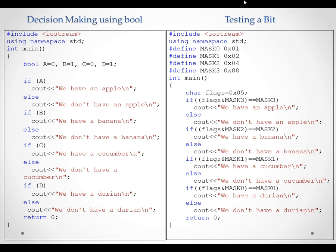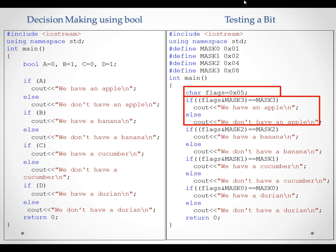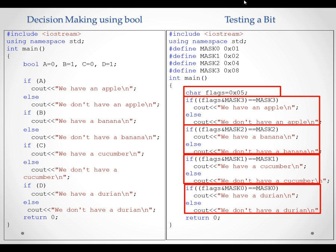The program on the left uses four boolean variables to check the status of apple, banana, cucumber, and durian. The program on the right uses a char variable 'flags' to store the status of apple, banana, cucumber, and durian in the bit pattern. It then bitwise ANDs the flags with bitmasks to check whether a particular bit is set or not. Apple's status is stored at bit 3, so it will bitwise AND with mask 3. Banana is at bit 2, cucumber is at bit 1, and durian is at bit 0. When the result of flags bitwise AND the mask is the same as the mask, the bit is set. Note: by default, Visual Studio does not recognize the bit pattern of the masks, so we use the #define directive to define each mask.